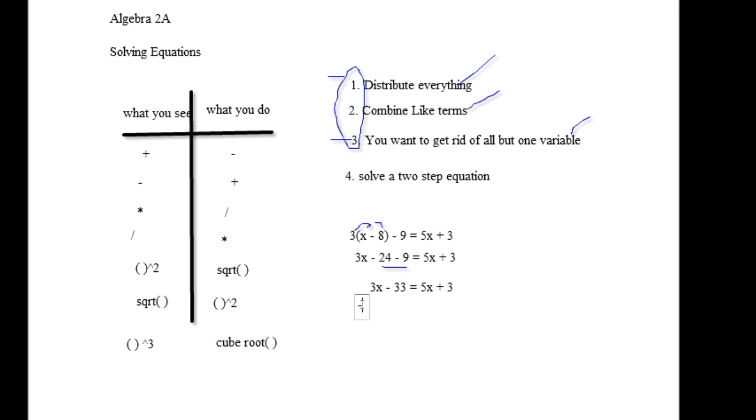And then I would just get rid of one variable. So I'd minus the 3X from both sides, minus 3X. And negative 33 equals 2X plus 3. Well, this one just happened to turn out to be that way. So if I minus the 3 from both sides, I get negative 36, not minus the 3, I would get negative 36 equals 2X.